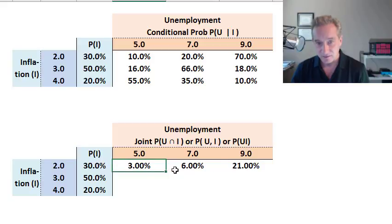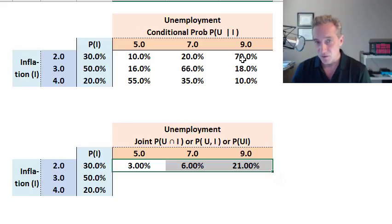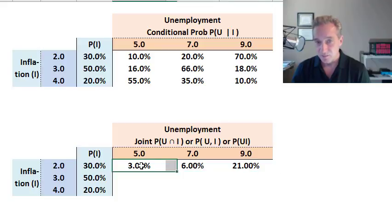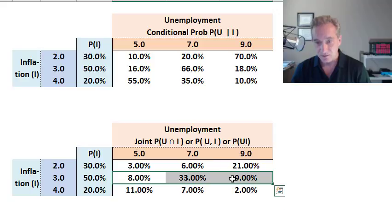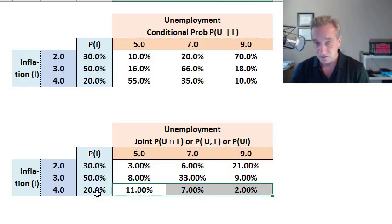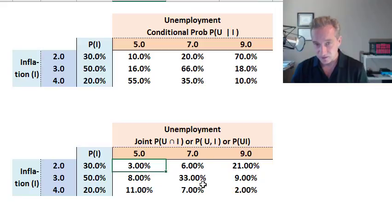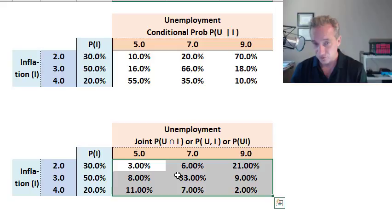The sum of the first row of joint probabilities equals 30%, because the conditional probabilities in that row summed to 100% and the unconditional for inflation equals two is 30%. Copying down: the second row sums to 50%, and the third row sums to 20%. So the inside box of nine cells — three by three — each contains a joint probability. This is the probability matrix.